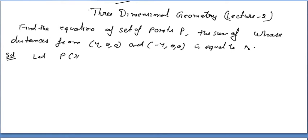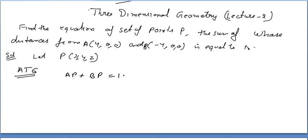The solution will be simple. Let point P be (x, y, z) because we want to get the equation of all those points. Whenever you want to find the equation, you take the general point as (x, y, z). According to the question, let A and B be those two points, and AP plus BP is equal to 10.